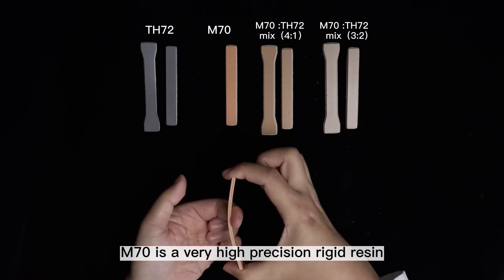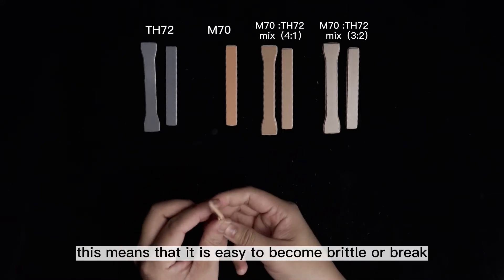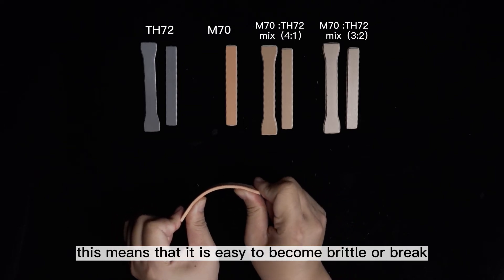M70 is a very high precision rigid resin. This means that it is easy to become brittle or break, like this.